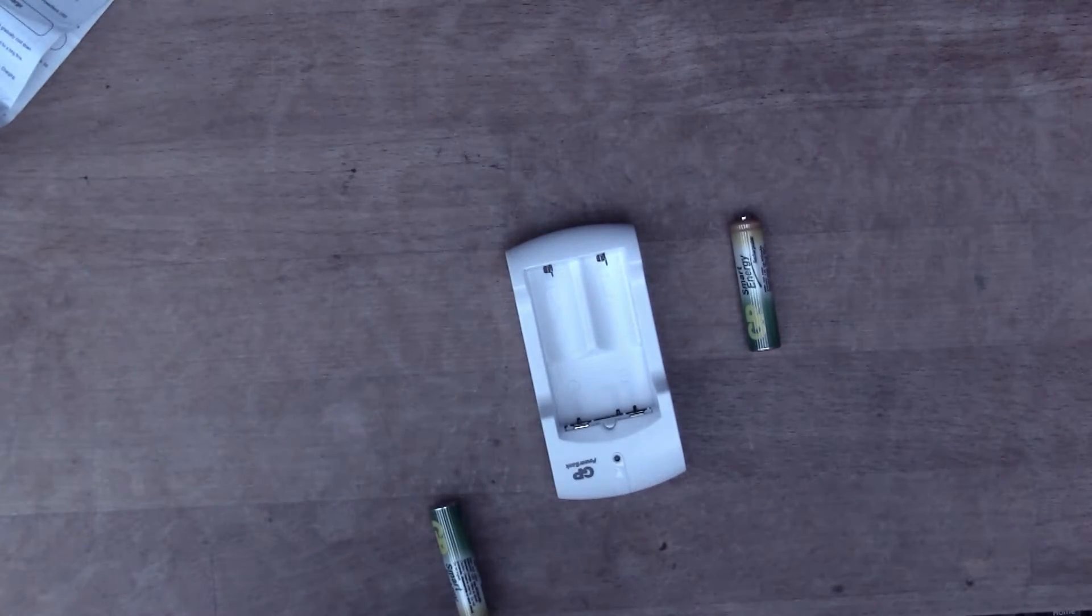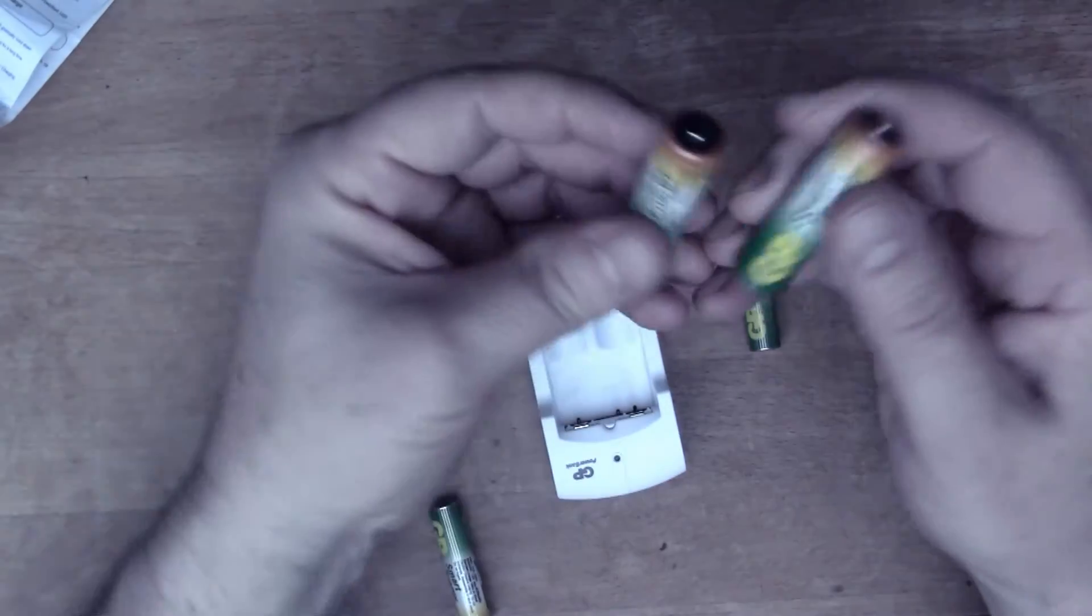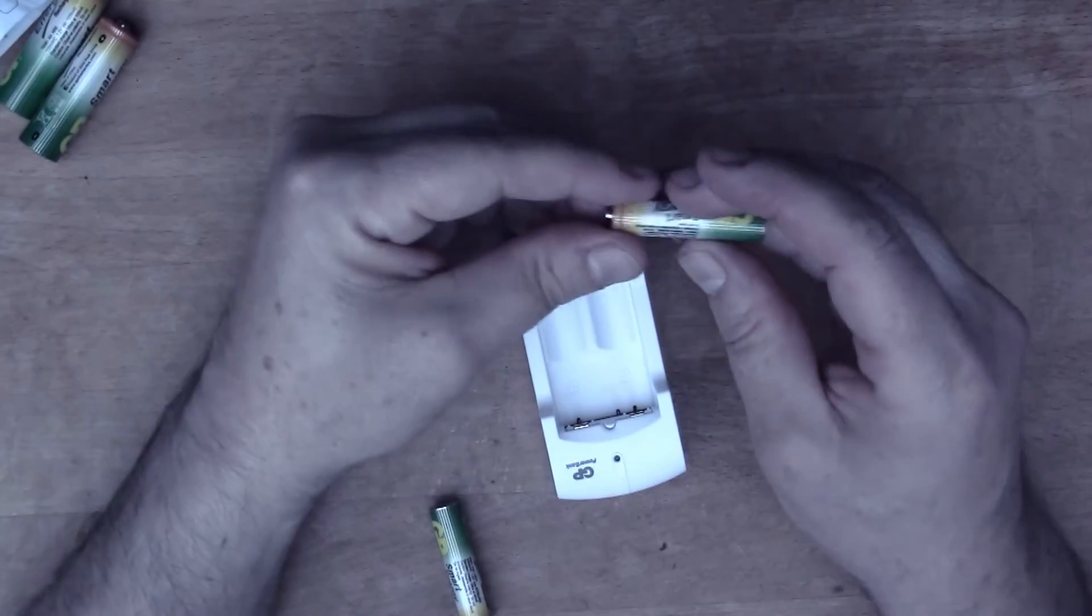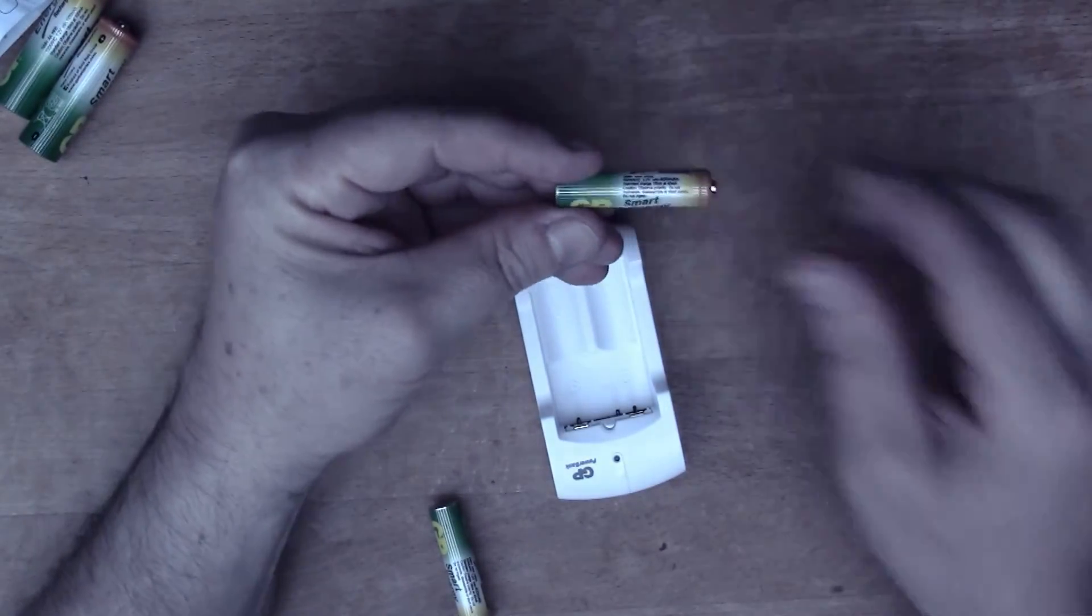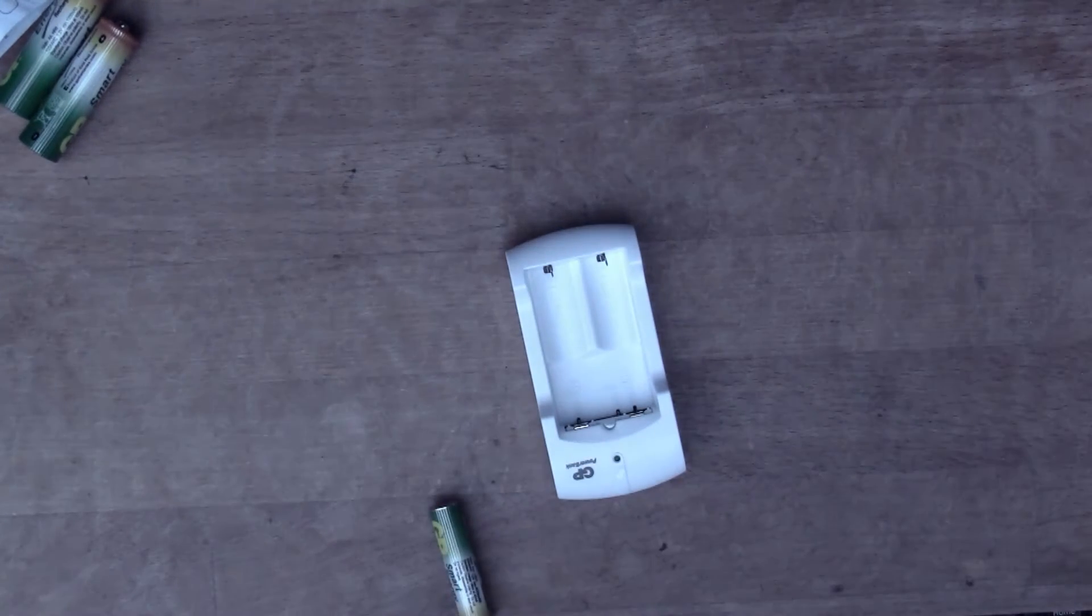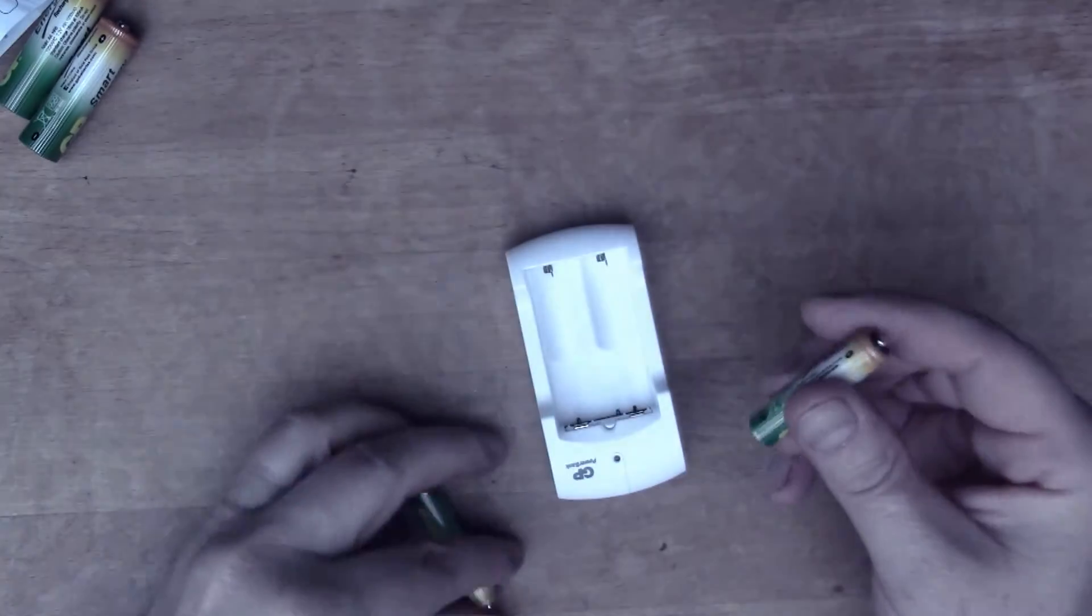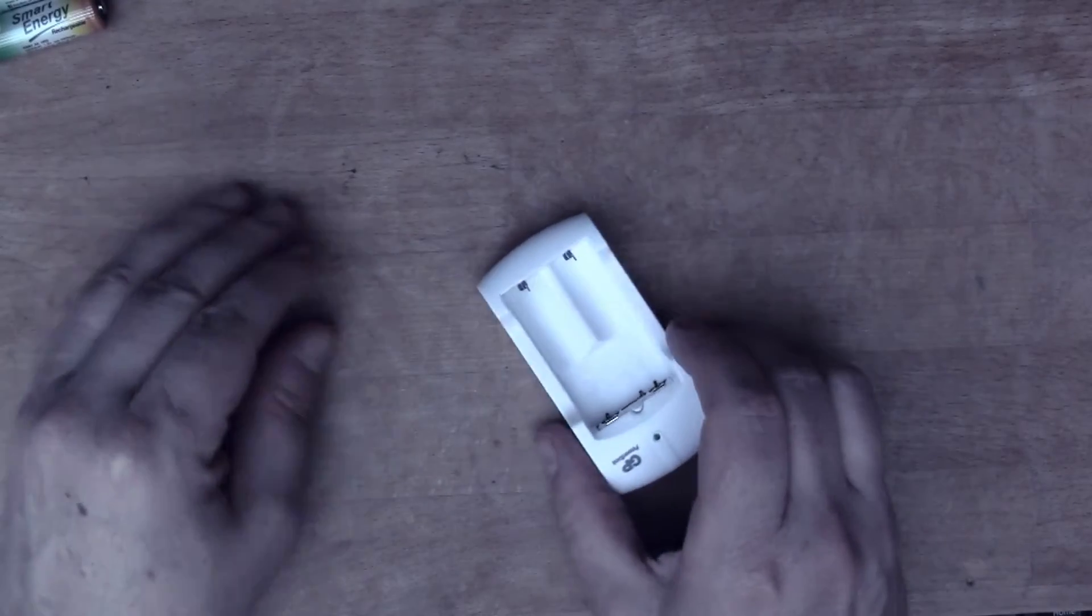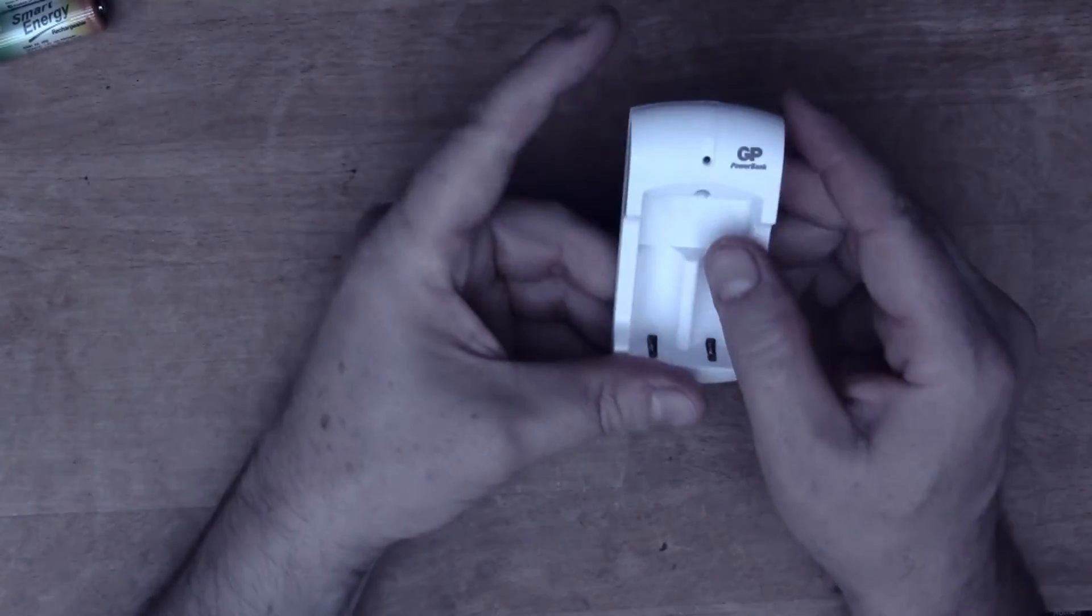two AA cells that say 1000 milliamp hours. Not very good ones, they're quite light, obviously don't have much charge, but there we go. And a couple of AAA cells, these ones say 400 milliamp hours, and the charger.